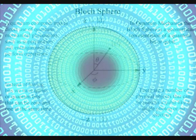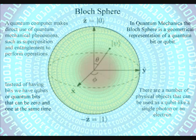Instead of having bits, we have qubits, or quantum bits, that can be zero and one at the same time.